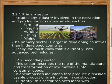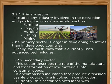The primary sector includes industries involved in the extraction and production of raw materials, such as farming, logging, hunting, fishing, and mining. The primary sector is large in developing countries. We must also know that it currently uses advanced technology — for example, as you can see in this image, farming is now using drones.